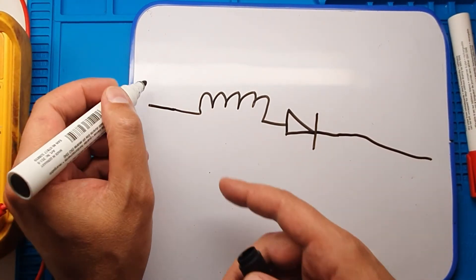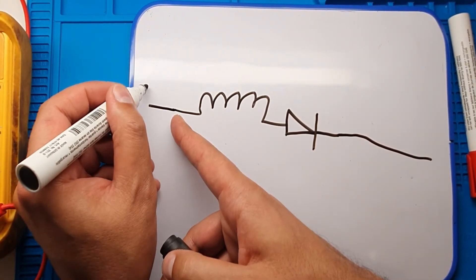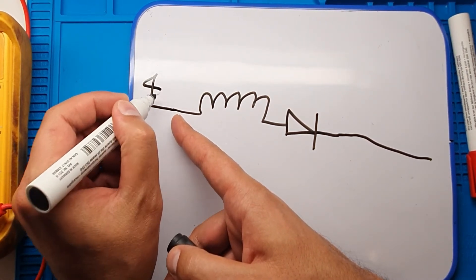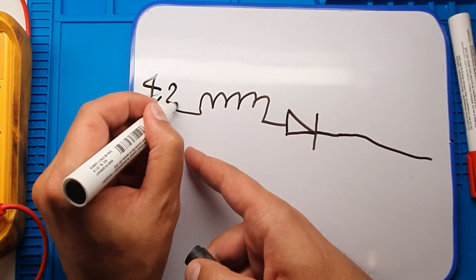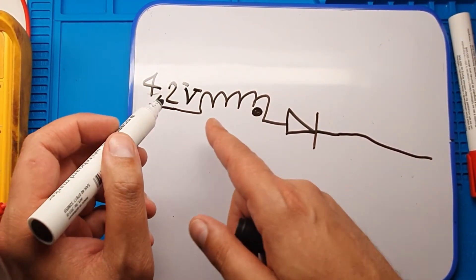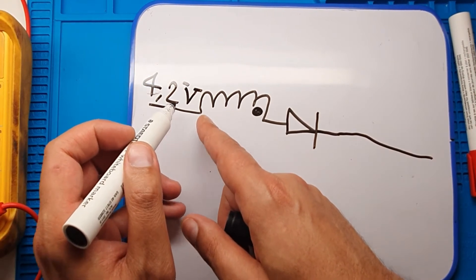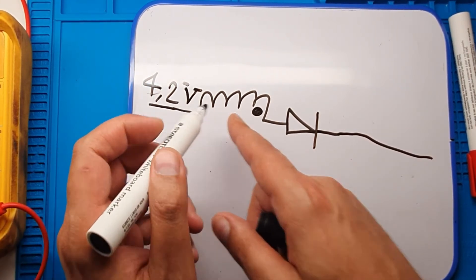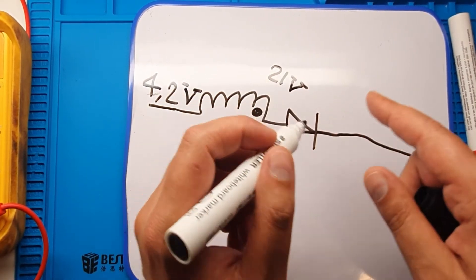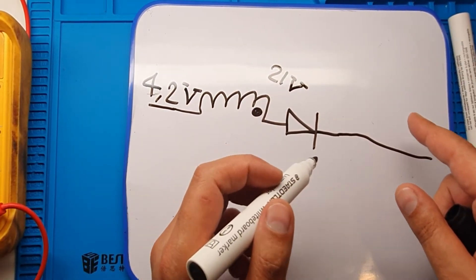Voltage comes from here. It is 4.2 volts. This coil, coil converts the 4.2 volts to 21 volts to turn on the backlight of iPhone 6S screen.